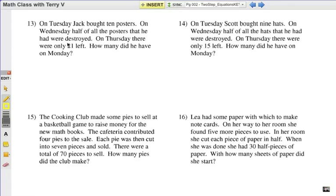On Tuesday, Jack bought 10 posters. I'm going to highlight that information so far. On Wednesday, half of all the posters that he had were destroyed. On Thursday, there were only 21 left. How many did he have on Monday? So focusing on the last part there, we have to assign a variable. I'm going to say M, capital M, stands for how many posters he had to start with on Monday. So we start with M posters on Monday, and he bought 10 posters. We're just going to add 10 to that. On Wednesday, half of all the posters he had, so half of all of this, were destroyed. On Thursday, there were 21.